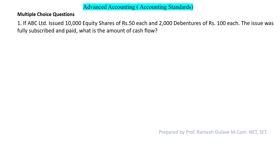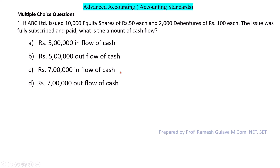The Cash Flow Statement covers inflow and outflow of cash. So as per AS3, it is an inflow of cash. Calculation: 10,000 equity shares × Rs 50 = Rs 5,000 and 2,000 debentures × Rs 100 = Rs 2,000. So Rs 5,000 + Rs 2,000 = Rs 7,000 inflow of cash. Both options C and D show Rs 7,000, but since it is an inflow, the right answer is option C: Rs 7,000 inflow of cash.